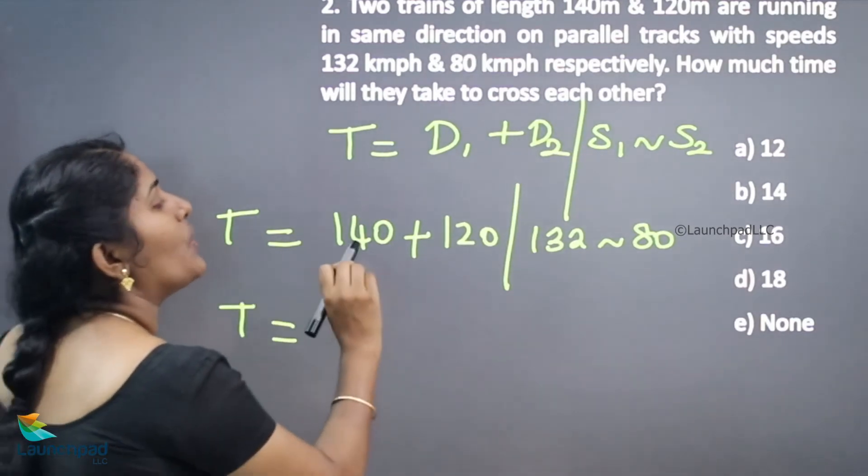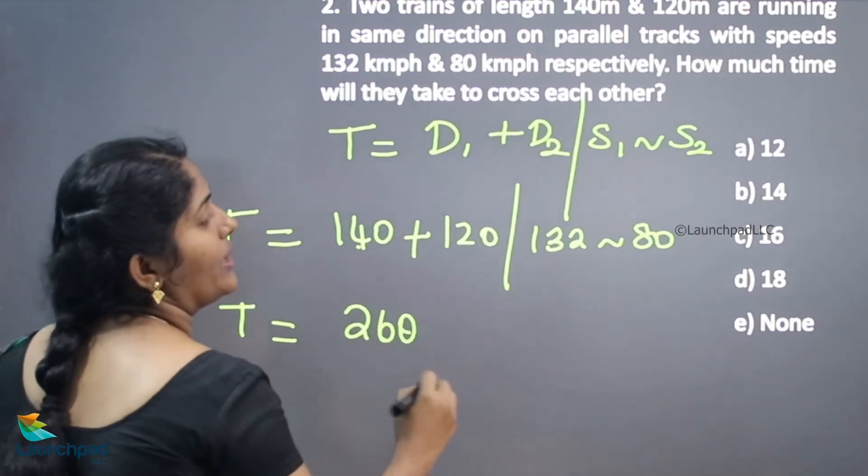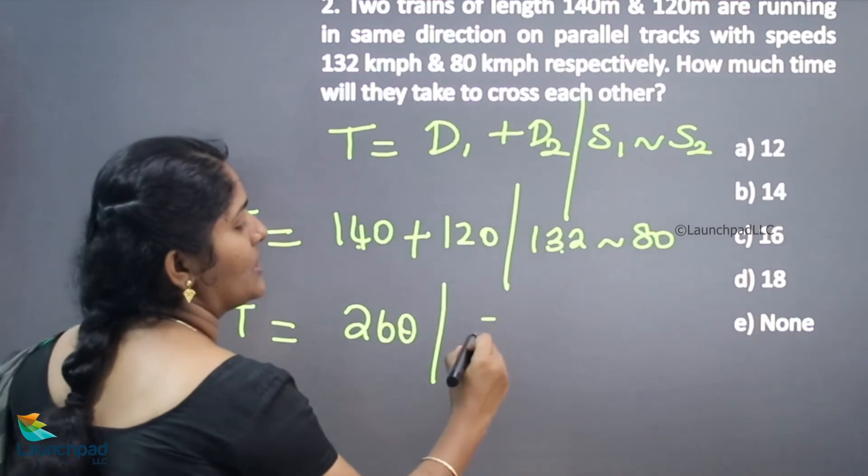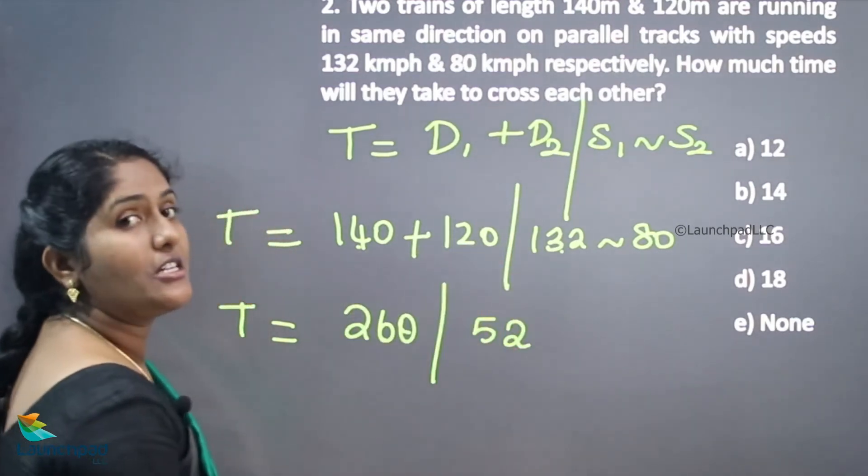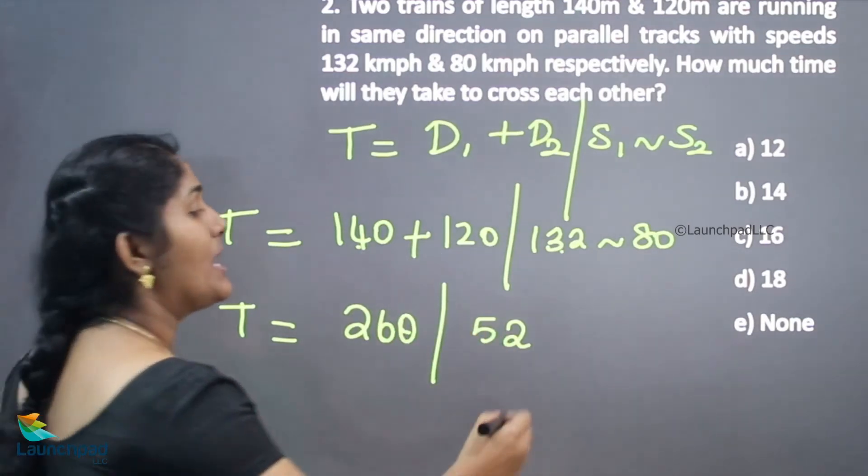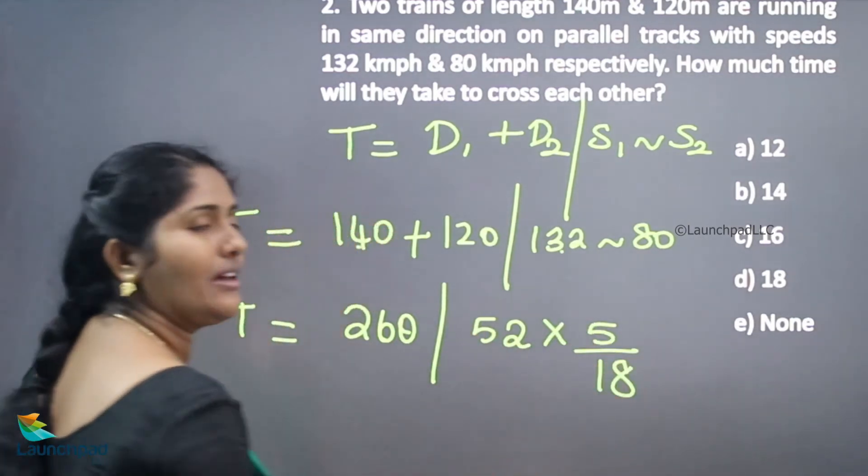So time is equivalent to 140 plus 120, 260 divided by what is difference between 132 and 80, 52. We should convert this 52 kilometer per hour into meter per second by multiplying with 5 by 18.